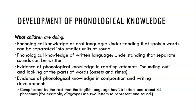Evidence of phonological knowledge in writing development is complicated by the fact that the English language has 26 letters but about 44 phonemes. An example of this is digraphs, which use two letters to represent one sound — for example, 'ph' and 'f' are two different letter combinations that share the same sound. Children in this stage are beginning to learn that one letter can have more than one sound, and one letter or combination of letters can have the same sound.